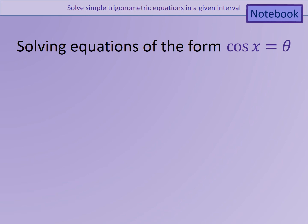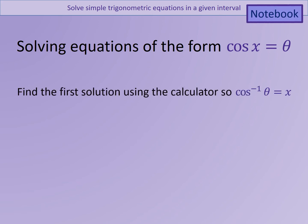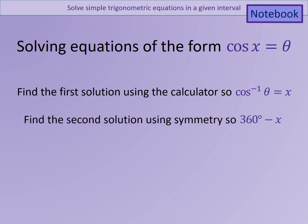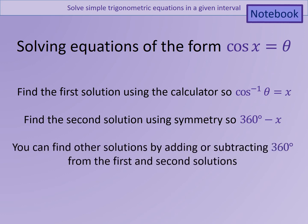Here are the rules for solving equations of the form cosine x equals theta. Find the principal value by doing inverse cosine of theta — that gives the first value of x. Then get the second solution using the symmetry of the cosine curve: 360 degrees minus the principal value. Because cosine has a period of 360 degrees, you can then add and subtract 360 from both solutions to get any others required in the given range.